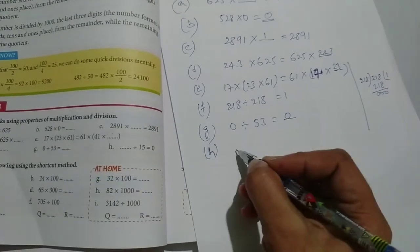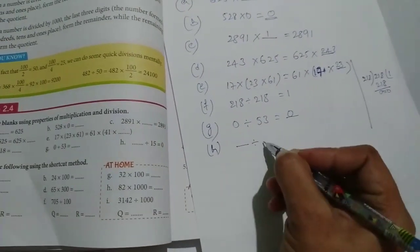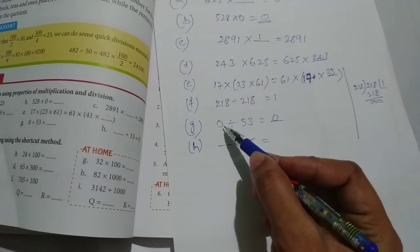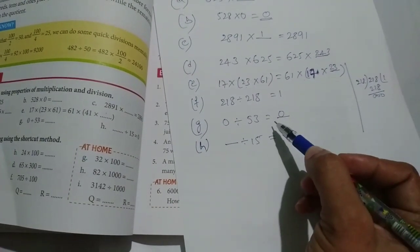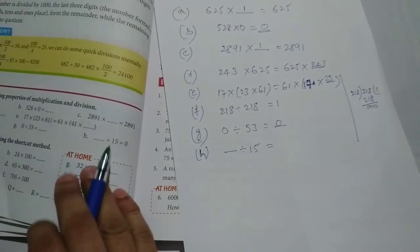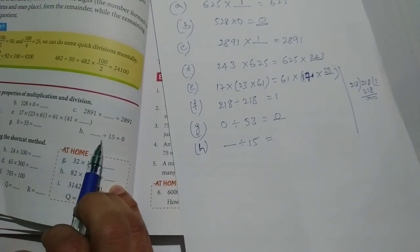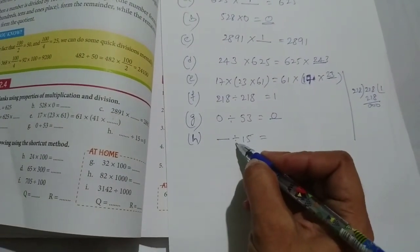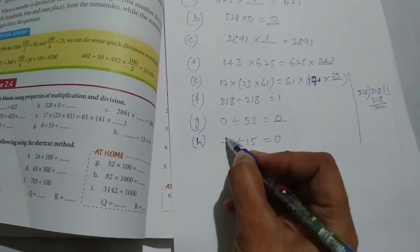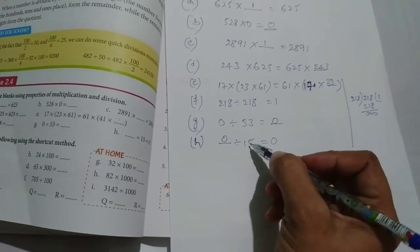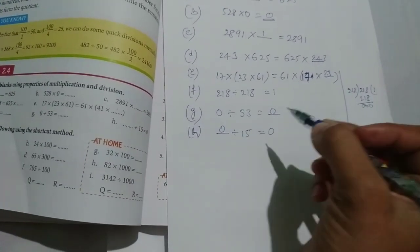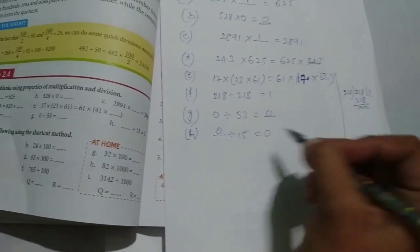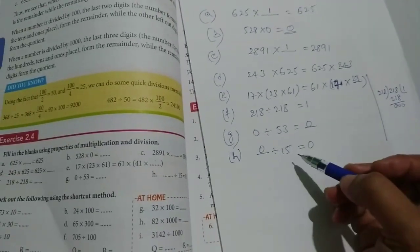Next problem H. Dash is divided by 15 is equal to - see here, 0 is divided by 53 is equal to 0. But here, dash is divided by 15 is equal to 0. Which number should be here? 0. Did you know? Any number, you divide 0, is equal to 0. So the answer is 0, and here the numerator is equal to 0. Did you understand till here?